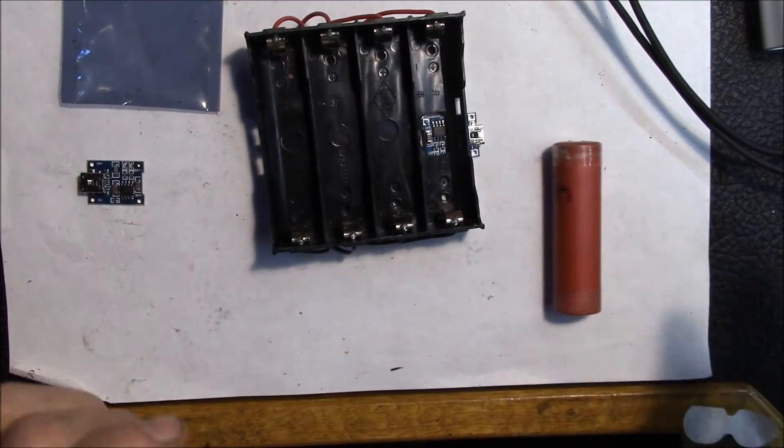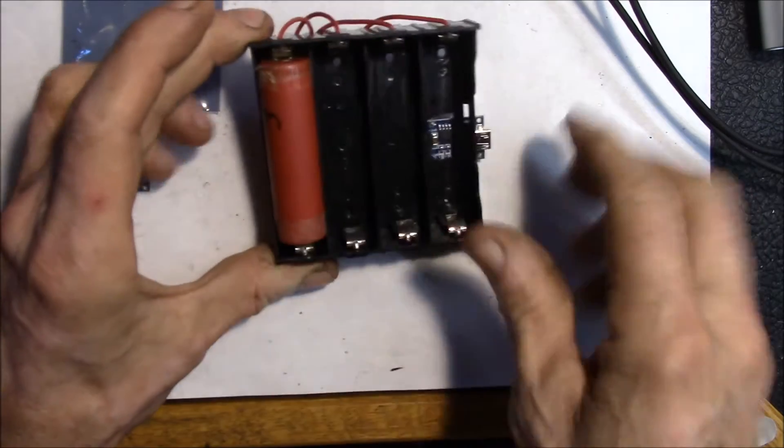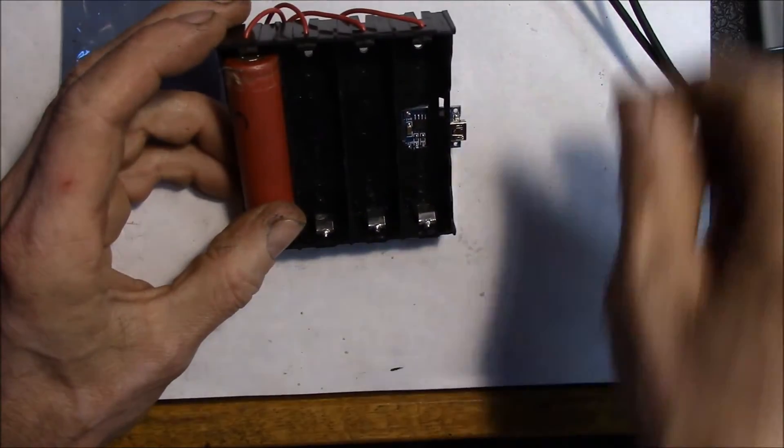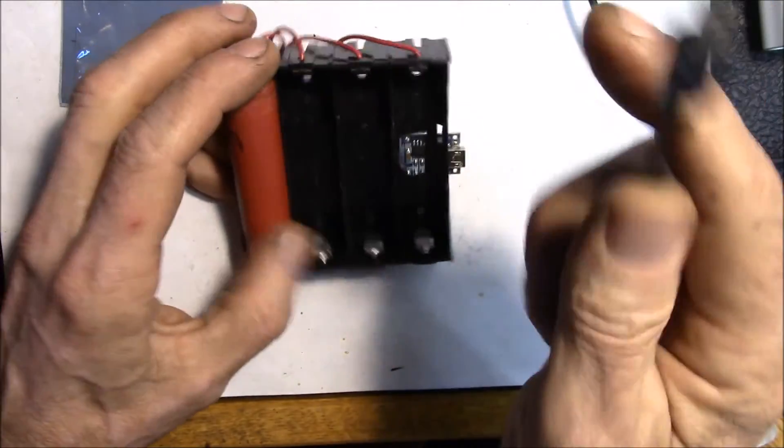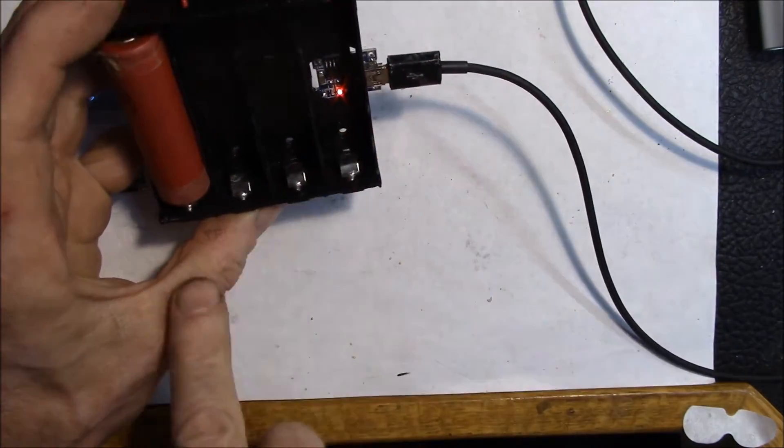Negative down there, and then you can plug in one, two, three, or four batteries into the holder, bring over your USB cable, and you can see you get the little red LED indicating charging.